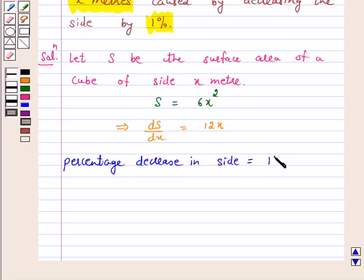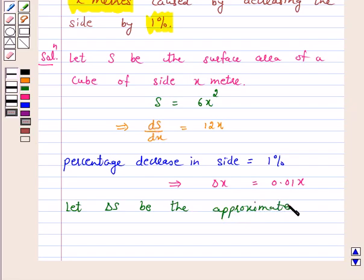is equal to 1%. This implies delta x is equal to 1% of x that is 0.01x. Let delta x be the approximate change in the surface area.